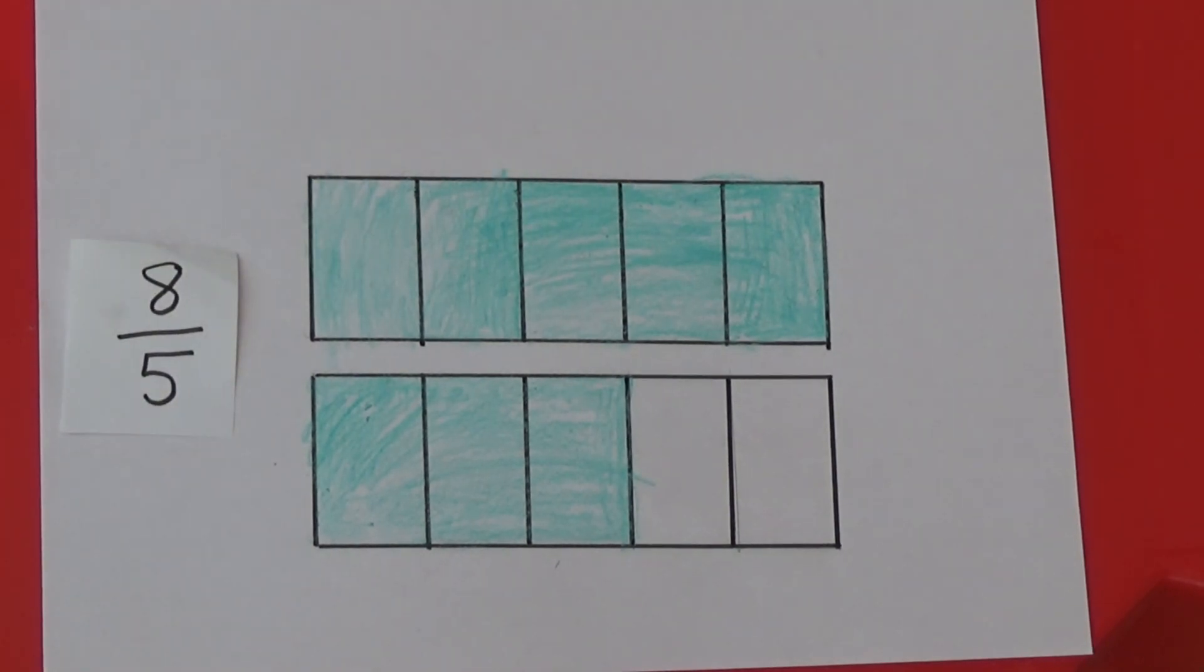We can see this looks a bit strange as the numerator is bigger than the denominator. Any fraction where the numerator is bigger than the denominator is called an improper fraction.